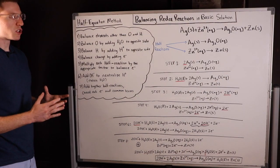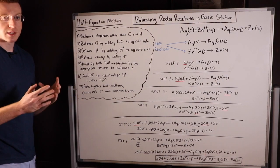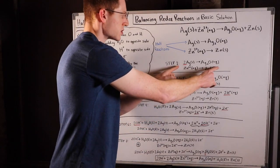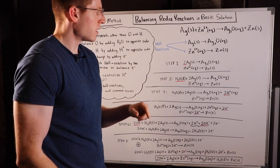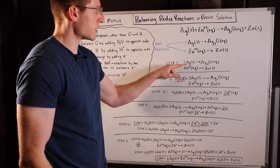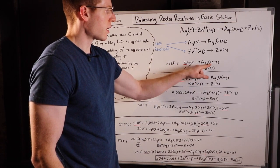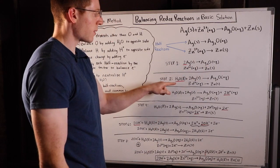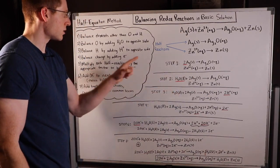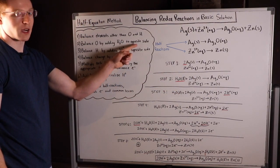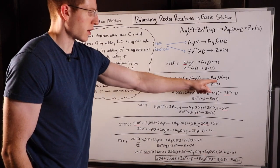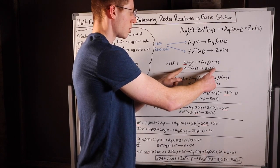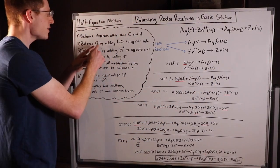Step two: we balance oxygen by adding water to the opposite side. Let's look at our equations - is oxygen balanced in the first equation? We have no oxygens on this reactant side but one oxygen on the product side over here, so I need to add an oxygen to the reactant side. I'm gonna do that by adding one water molecule. You see I added water to the opposite side to balance this oxygen, one oxygen with one oxygen.